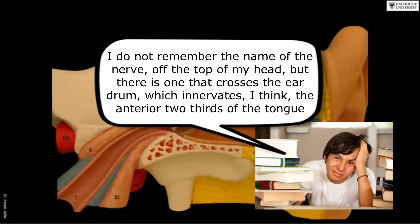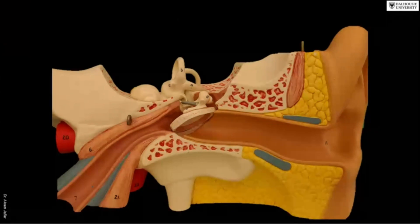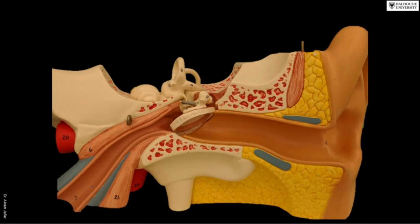As a dentist, you should care about the ear because the nerves supplying the middle and external ear — like the auriculotemporal nerve, a branch of the mandibular nerve, and the glossopharyngeal nerve — also supply the teeth and gums. That's why a toothache might present as an earache — what we call referred pain — because nearly the same nerves supply both the ear and the teeth and mouth.